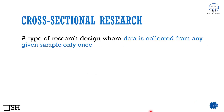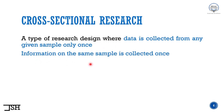Cross-sectional research is a type of research design where data is collected from any given sample only once. Information on the same sample is collected only once. Two important points: data or information has to be collected from the same sample, and it has to be collected only once. Let me give you an example.